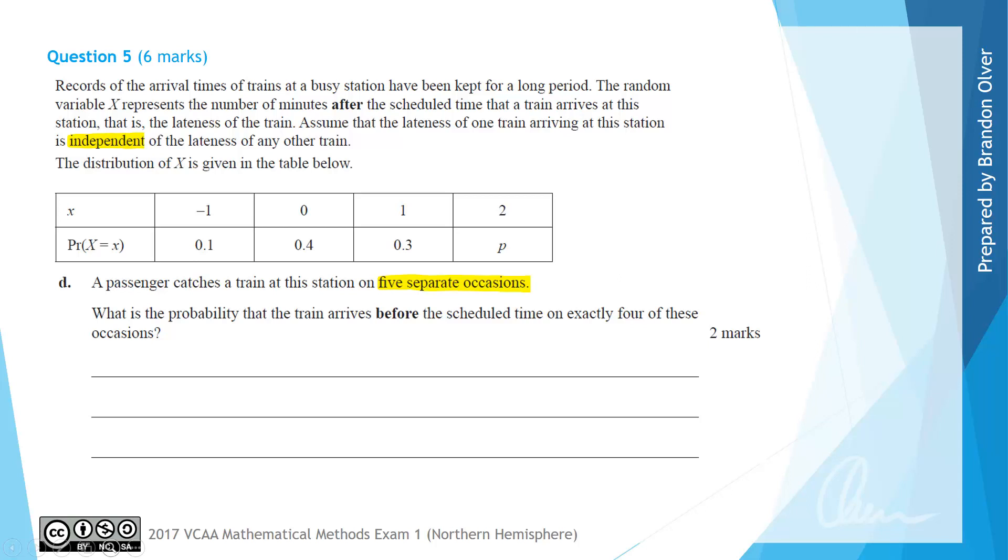So for part D we're asked what is the probability that a train arrives before the scheduled time on exactly 4 of these occasions.